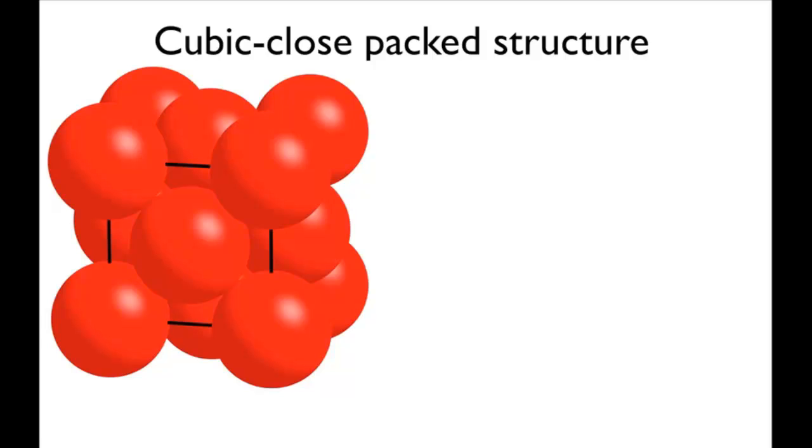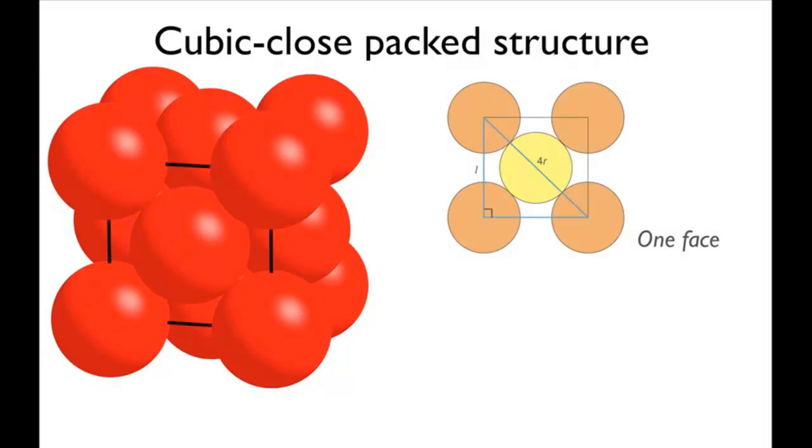The atoms on the vertices are not in contact with each other. An atom on a vertex touches an atom on the centre of a face, so the distance between their centres is two times r. Looking at just one face of the cube, the distance between opposite vertices is 4r.